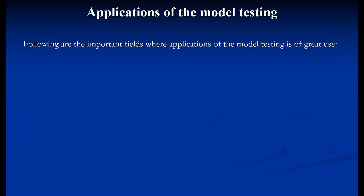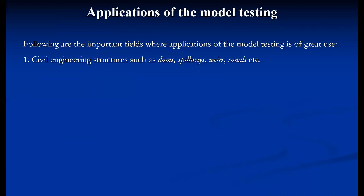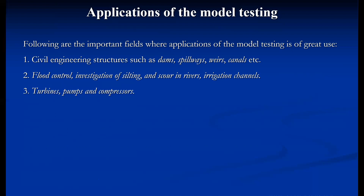The following are the important fields where model testing is applied and is of great use. Civil engineering structures such as dams, spillways, weirs, panels, etc. Flood control, investigation of silting and scour in rivers, and irrigation channels — because these are large structures, it is not economical to perform trial-and-error methods on actual systems or locations. Turbine pumps and compressors, especially at large scale as used in power plants, their model testing is essential and convenient as well.